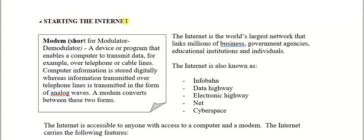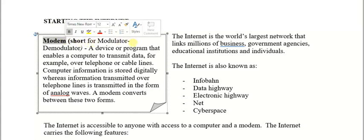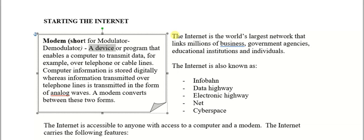Starting the internet. A key term here is modem — short for modulator/demodulator. A modem is a device or program that enables a computer to transmit data, for example over telephone or cable line. When you apply for your internet service from Flow or DigiCell, they will give you a modem, because without a modem you won't be able to access the internet.